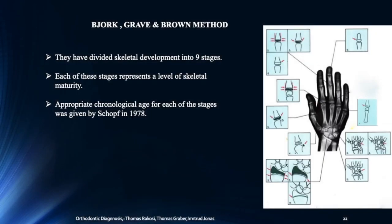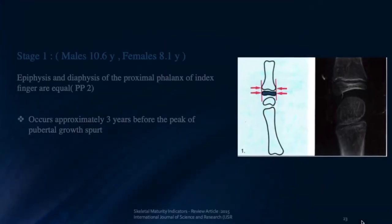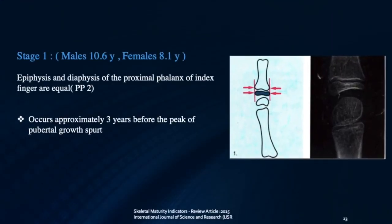Coming to the Jog, Gray, and Brown method, they have divided skeletal development into nine stages, and each of these stages represents a level of skeletal maturity. In Stage 1, the epiphysis and diaphysis of the proximal phalanx of the index finger are equal. We denote this as PP2, and it occurs three years before the peak of the pubertal growth spurt.